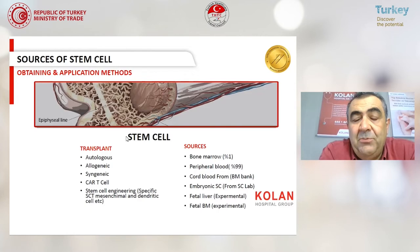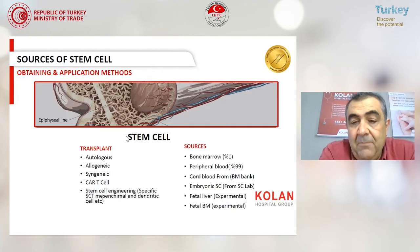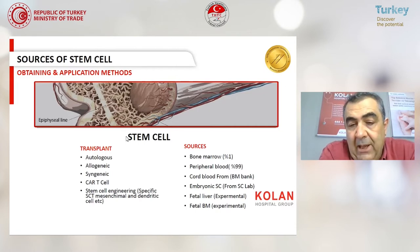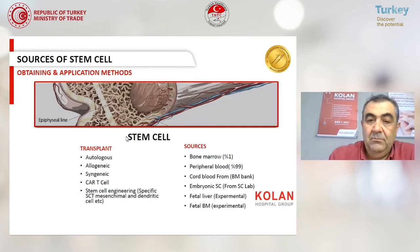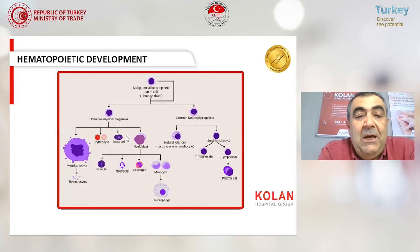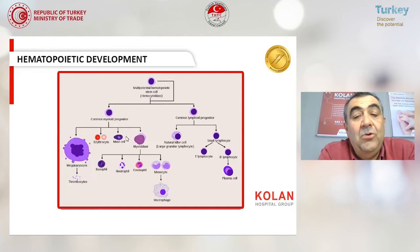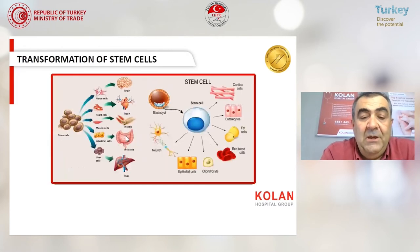Which sources do we use for stem cells? Bone marrow collected directly, peripheral blood cells — which we use most commonly — cord blood from the bone marrow bank, and from the lab: embryonic stem cells, and fetal liver and fetal bone marrow, which are all experimental. This is the hematopoietic stem cell cascade — from primary stem cell ultimately producing neutrophils, thrombocytes, and erythrocytes.